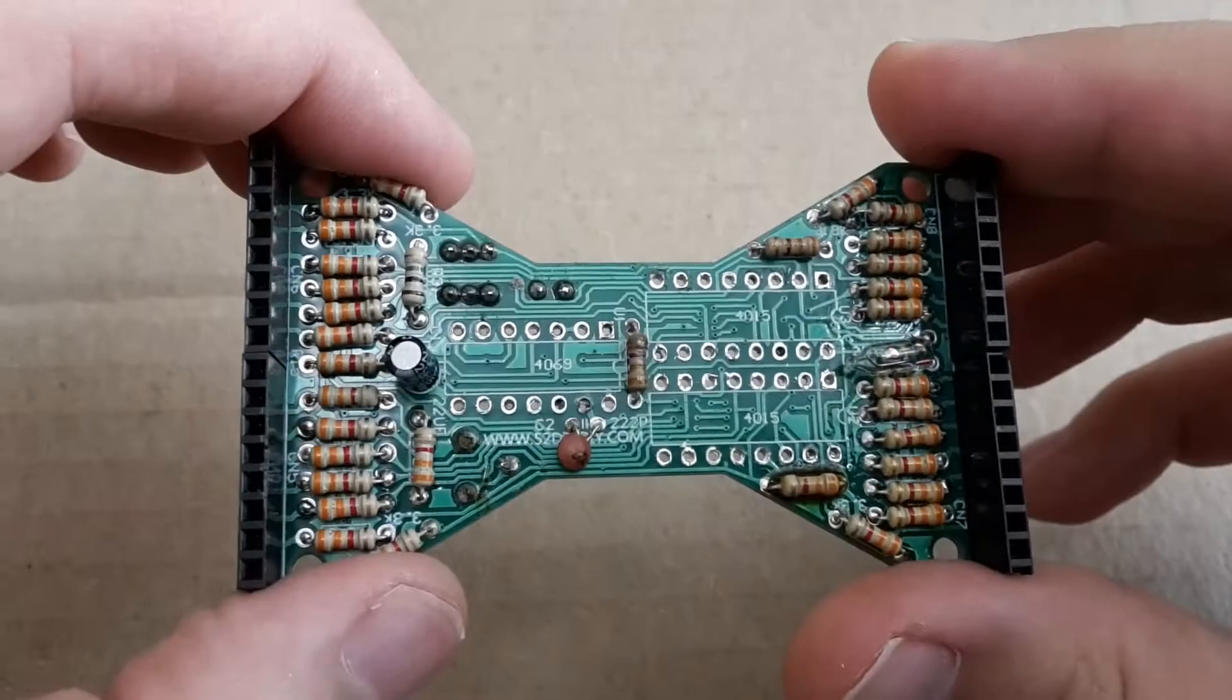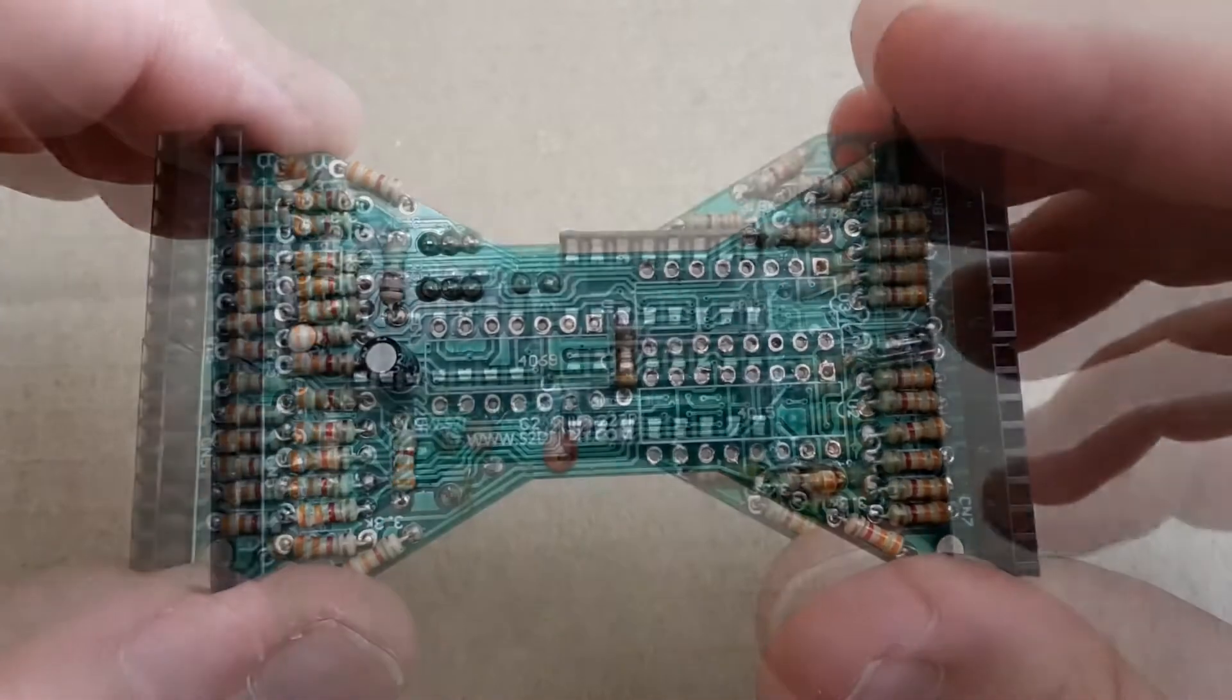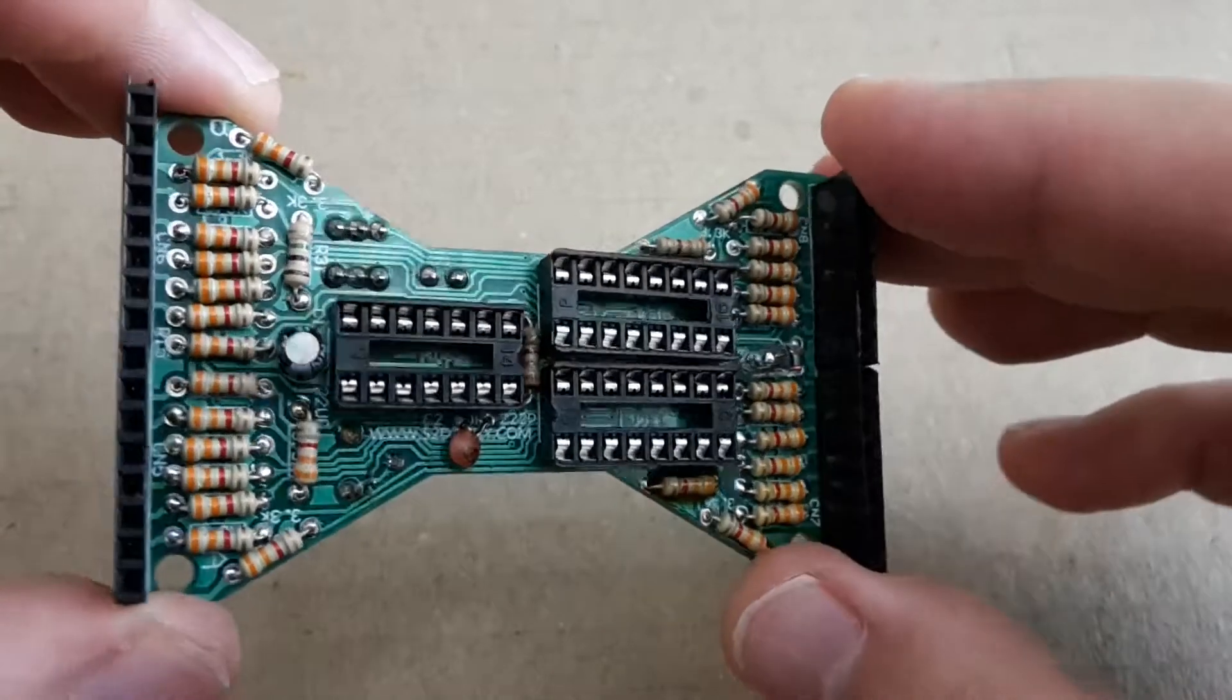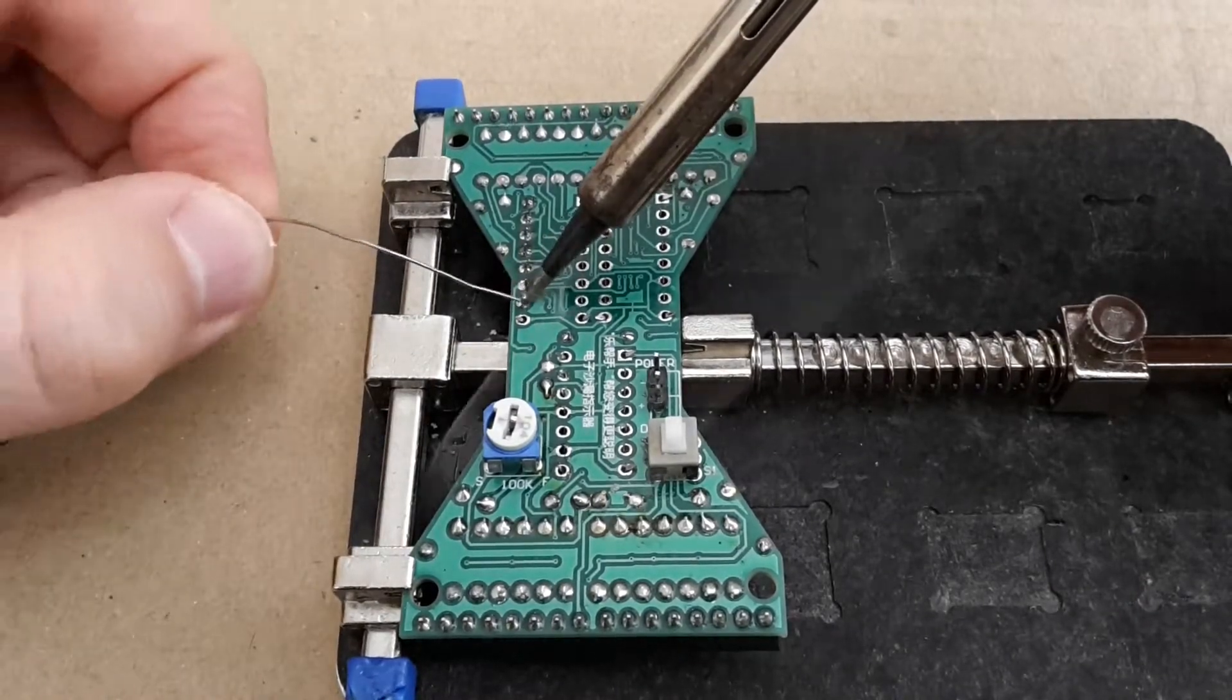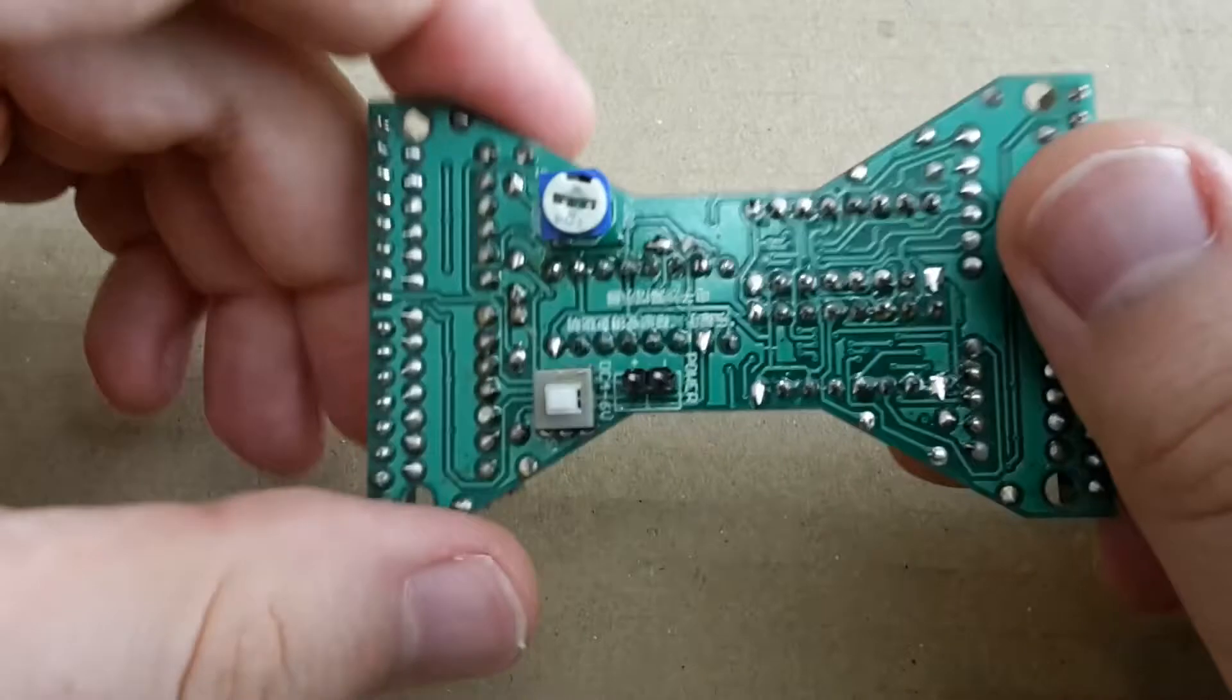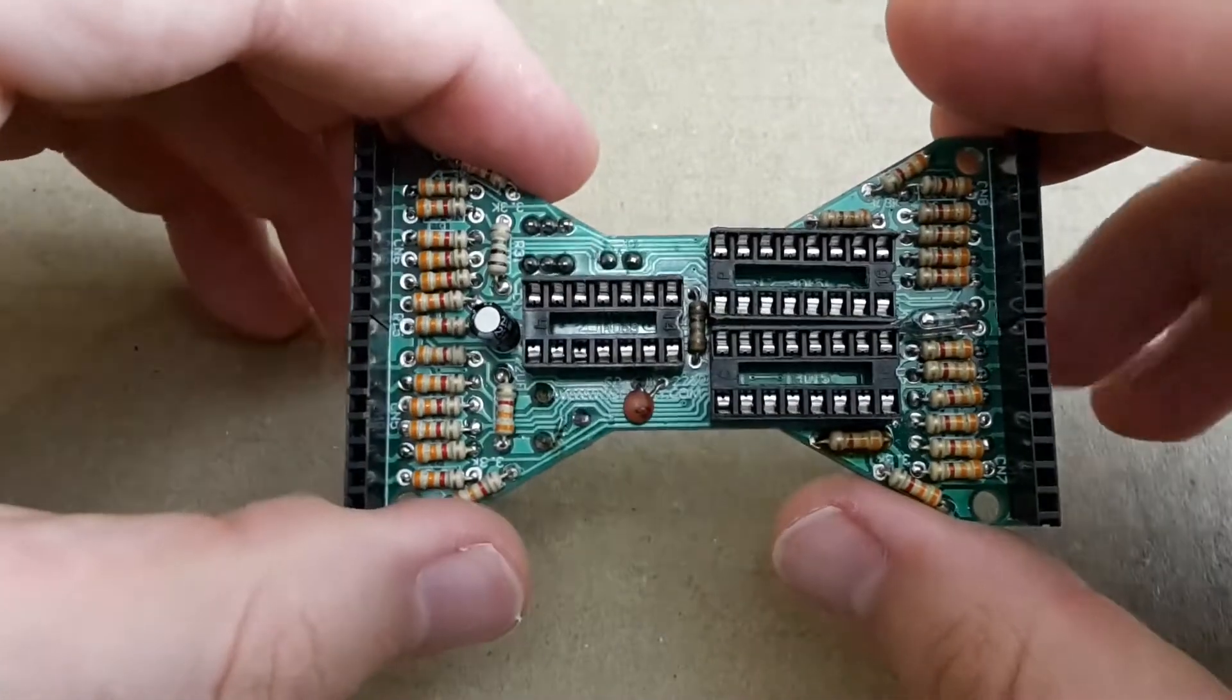I've already removed the ICs from the board and instead of directly soldering them to the board I'm going to use these sockets. Let's solder them quickly on the board. I also recommend you use these IC sockets because it's much easier to remove the ICs from the board for playing with them.